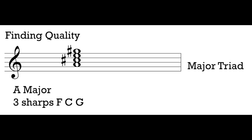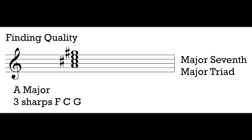We have figured out what kind of triad we have on the bottom — the lower 3 notes of our 7th chord. Now I need to figure out what type of 7th I have above my root: A to G sharp. Is that G sharp in the A major scale? Yes, G sharp is one of those 3 sharps, so this is a major 7th. I've figured out the triad on the bottom and the 7th above the root. When we have a major triad on bottom and a major 7th above the root, we call it a major 7th chord — this is A major 7. I use a capital M and a 7 to indicate the major 7th chord.